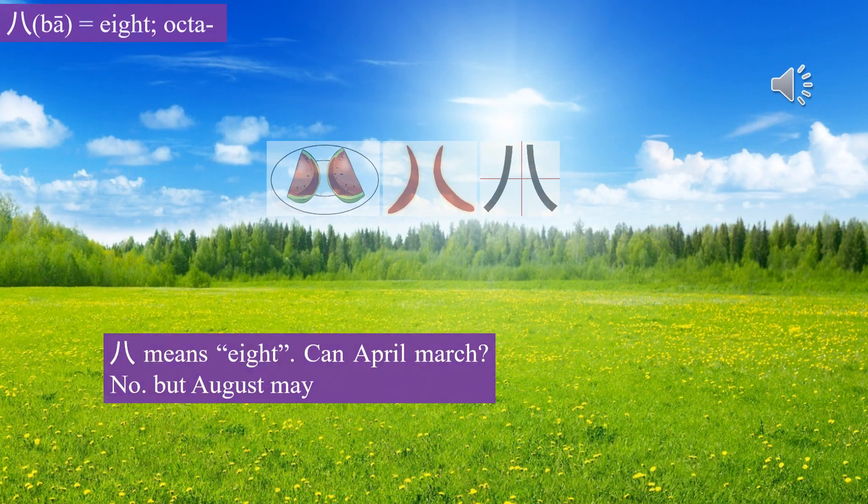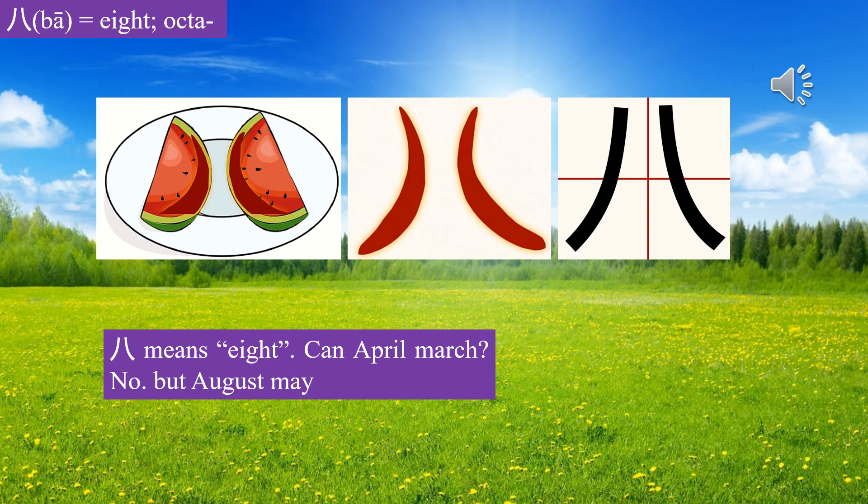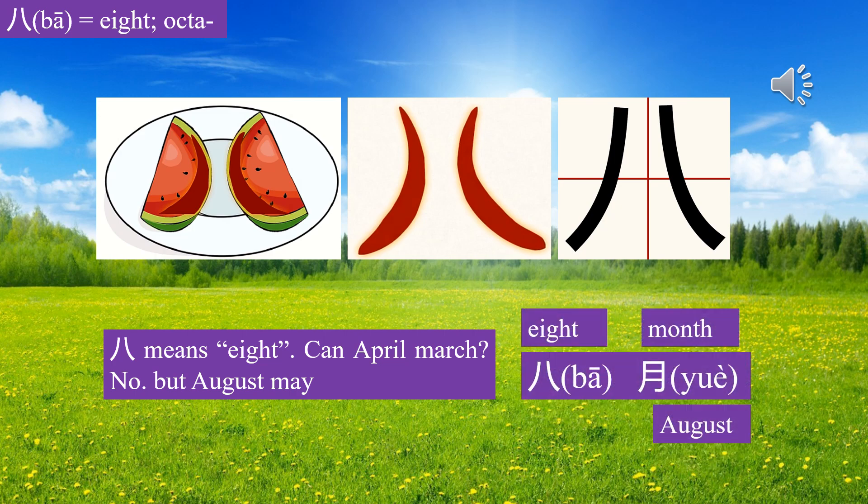Character Ba means eight. Can April march? No, but August may. Ba yue means August.